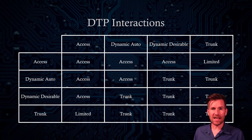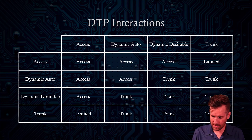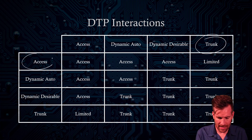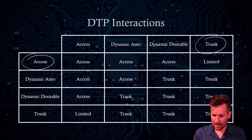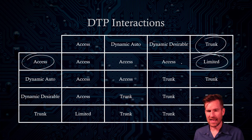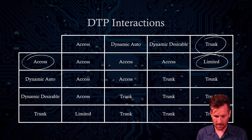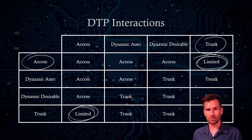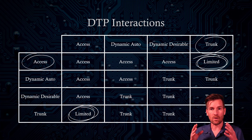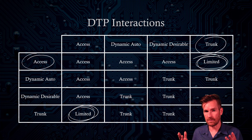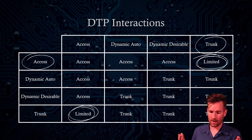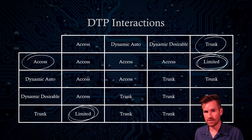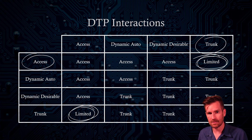That leaves us with the two conflict cases. When a trunk port tries to connect to an access port, we get limited connectivity. That's where communication breaks down and you don't get the full functionality of an Ethernet port — when one side is a trunk port and the other is an access port.